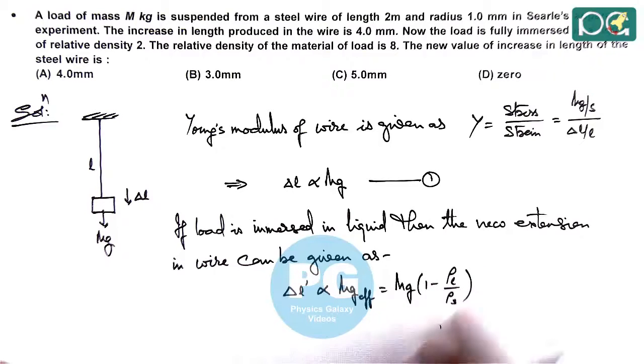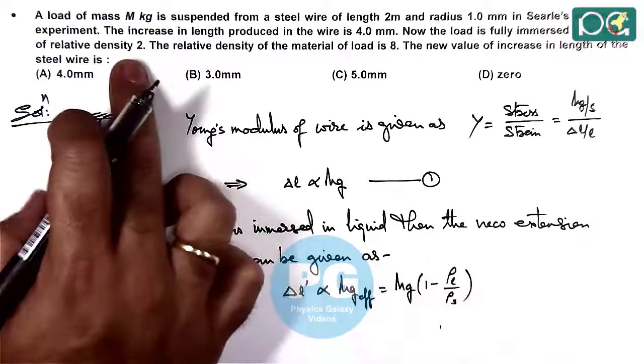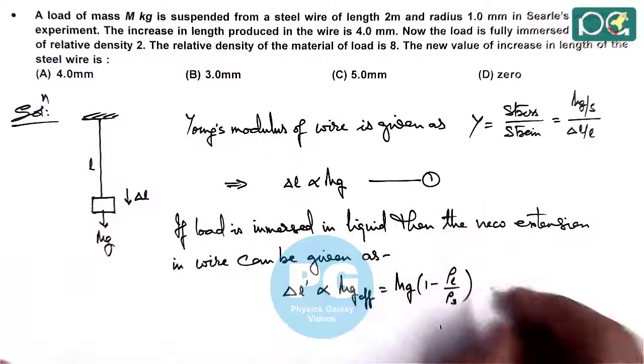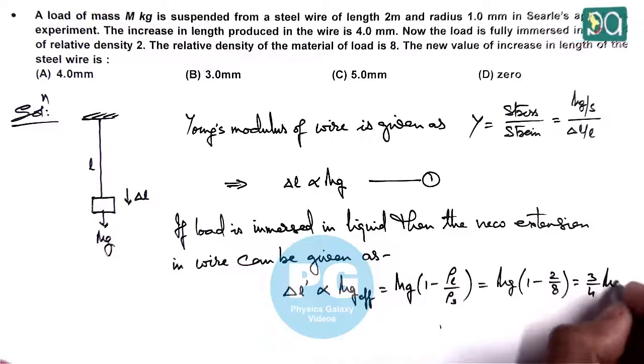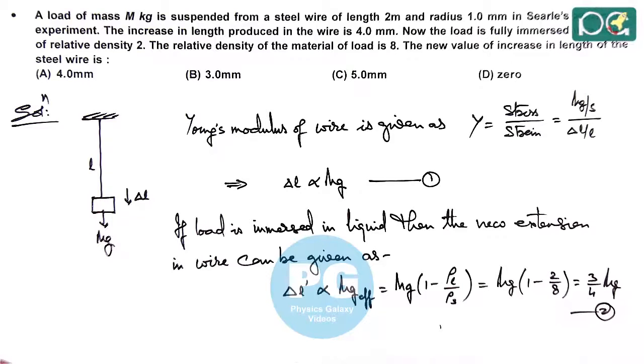In this case, rho of liquid is given as 2 and rho of solid is given as 8, so this is Mg times 1 minus 2 by 8, which equals 3 by 4 Mg. So this is our equation 2.